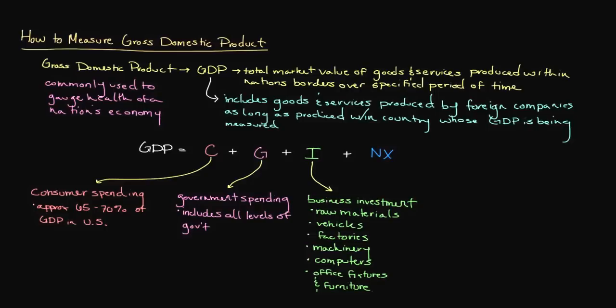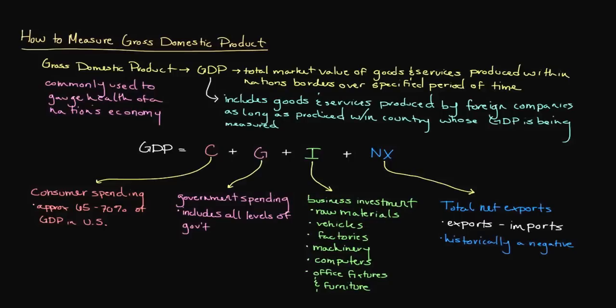The last contributing factor is NX, which represents the nation's total net exports. This can be calculated by taking the amount of a country's exports — meaning goods produced domestically and sold in another country — and subtracting what the country imports, or what is brought in after being produced in another country. Although U.S. total net exports are historically negative and thus do not contribute positively to GDP, recent increases in U.S. oil production have lessened dependency on foreign oil and produced positive net exports for the second quarter of 2013.